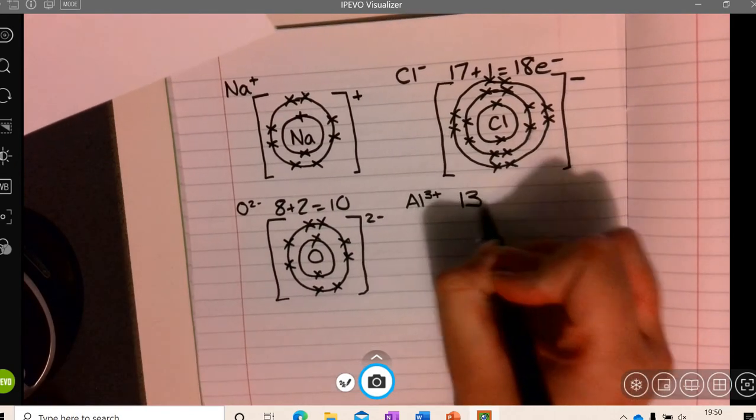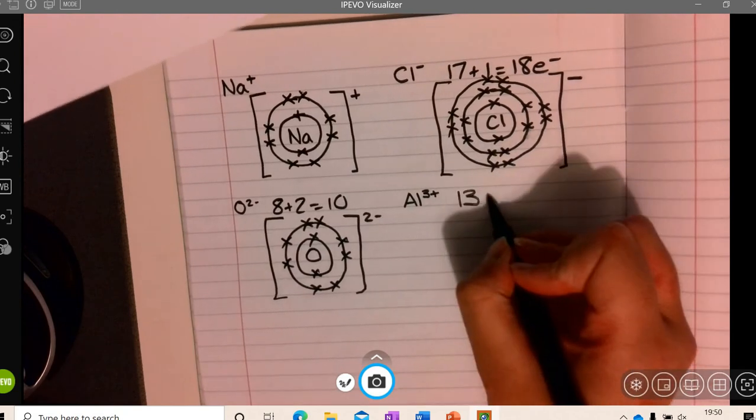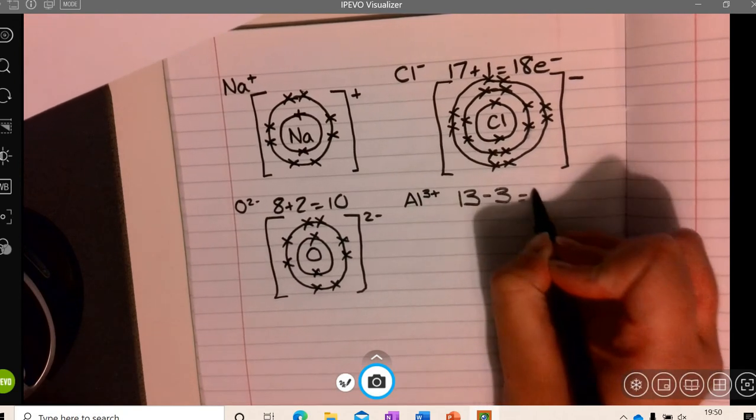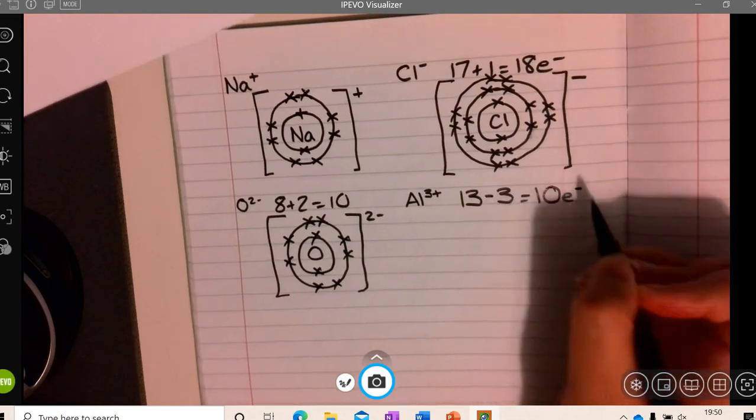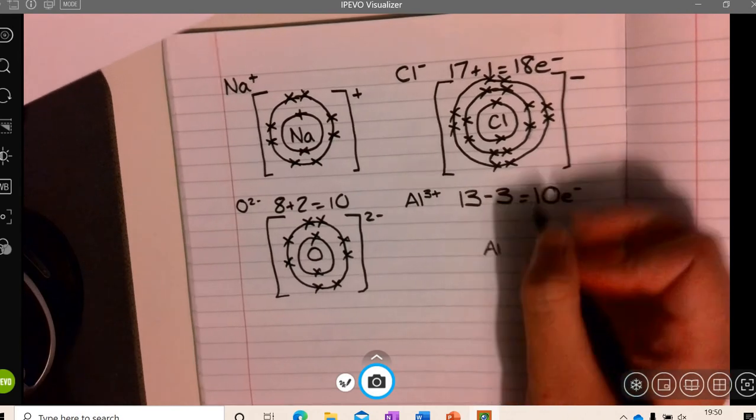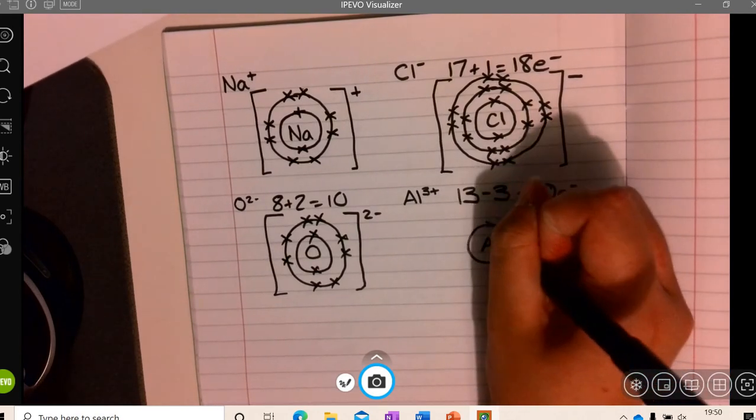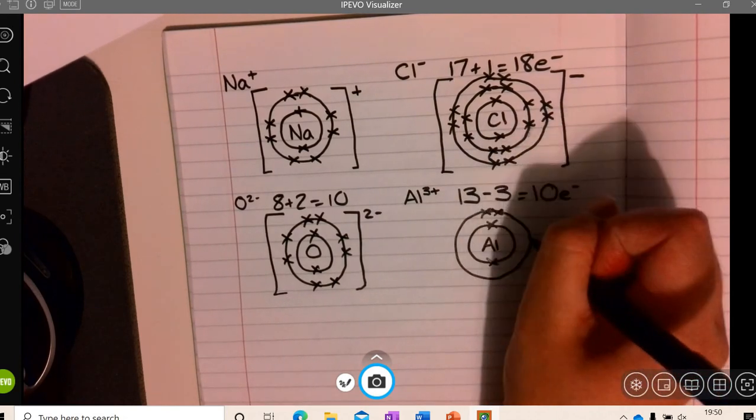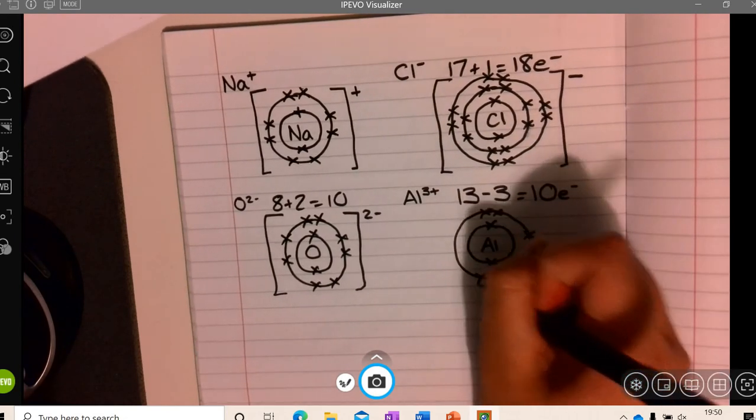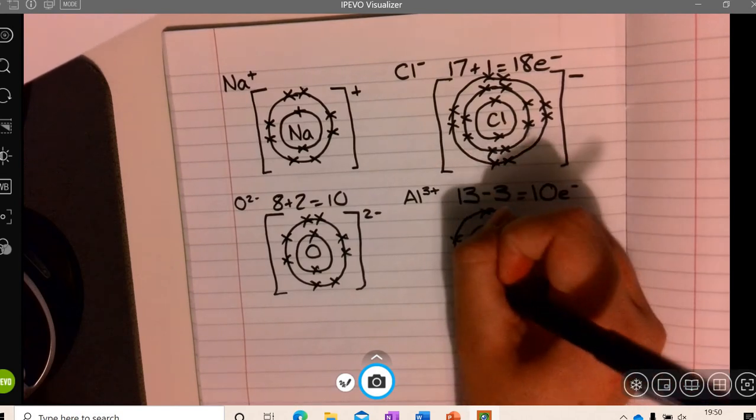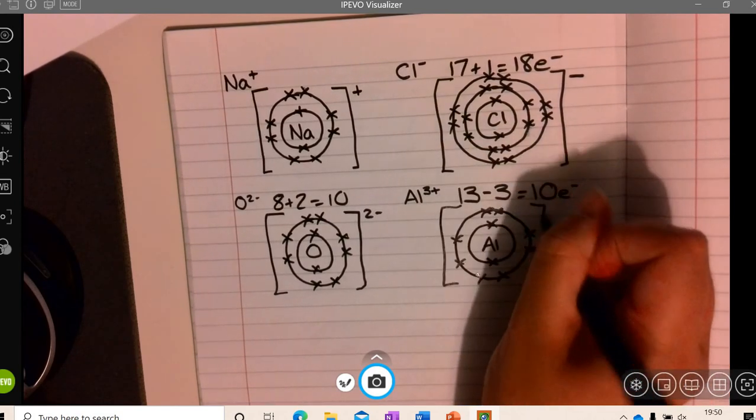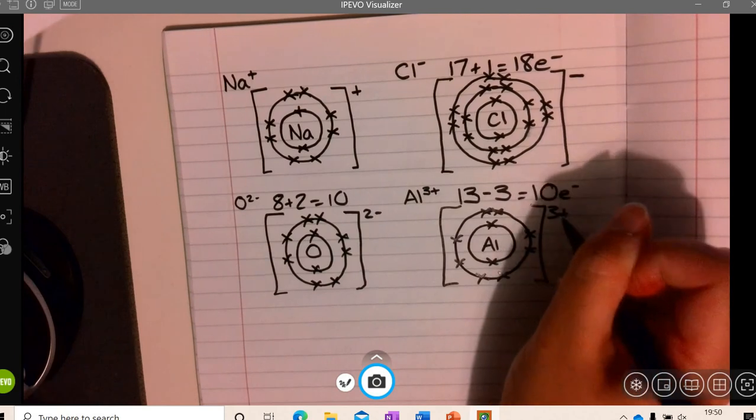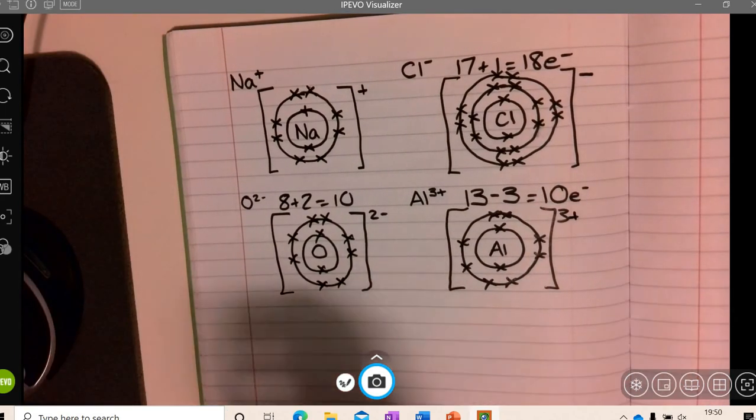Aluminium started with 13, because it's a plus charge. We lose 3 electrons, so this also has 10 electrons. Okay, so that is the answer to that part of our do now.